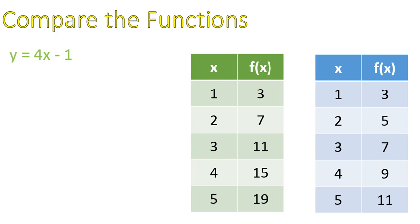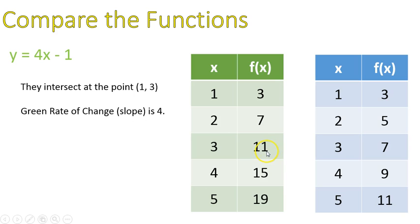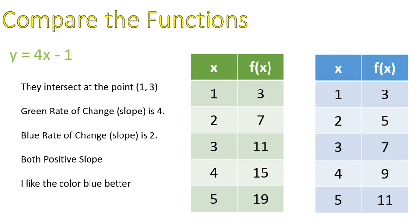Now that I have two comparable things, I can actually look at them and make some comparisons. First off, they intersect at the point 1, 3. That's a piece of information you might be asked about. The green rate of change, or the slope for the green one, is 4. We know that for a couple of reasons. One, it increases by 4 every time our x value increases just by 1. Look at that. It's a consistent increase of 4. Also, the number right in front of x is 4, so we know that the rate of change, or the slope, is 4. For my blue one, it increases by 2 every time my x values increase by 1. So the slope is 2. Both have a positive slope. I like the color blue better. Depends what we're asked when we're asked to compare functions, but most questions will ask about the slope, and possibly about the intersect, when you're asked to compare them.